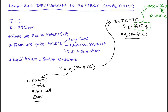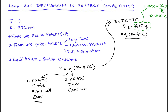The second possible outcome is if price is less than average total cost. If this happens, the term in parentheses — P minus ATC — will be negative, because we'll have a smaller value (the price) minus a larger value (average total cost). So the term in parentheses is negative, quantity is positive, a positive times a negative gives a negative, so profit comes out negative overall — or in other words, firms will be making a loss. And these losses will mean that firms will exit the industry.